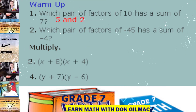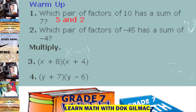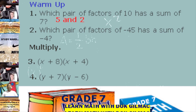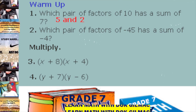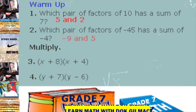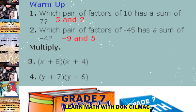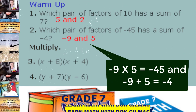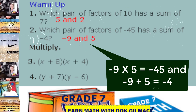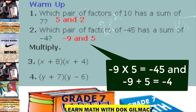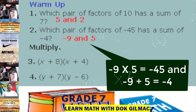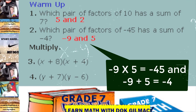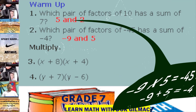Number 2. Which pair of factors of negative 45 has a sum of negative 4? That's right! It's negative 9 and 5. Negative 9 times 5 is negative 45, and negative 9 plus 5 is negative 4.